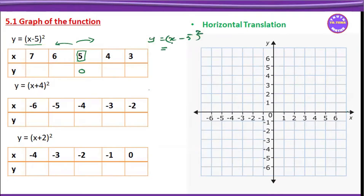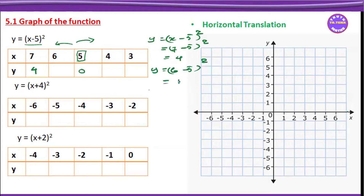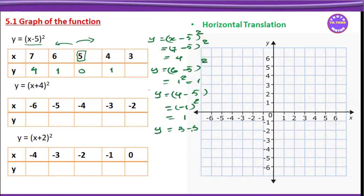y equals x minus 5, the whole square. For x=6: 6 minus 5 is 1, 1 squared is 1. For x=4: 4 minus 5 is minus 1, minus 1 the whole square plus 1. For x=3: y equals 3 minus 5, which is minus 2, the whole square, and that equals 4.